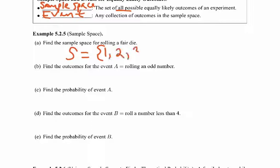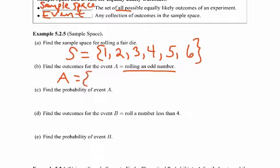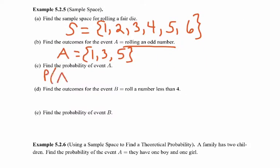The sample space for a six-sided die is {1, 2, 3, 4, 5, 6}. For event A — rolling an odd number — the outcomes are 1, 3, or 5. Notice that is a subset of the sample space. The probability for event A is the number of possibilities for the event out of the total in the sample space: 3 out of 6. For event B — rolling a number less than 4 — the outcomes are 1, 2, or 3, giving a probability of 3 out of 6.